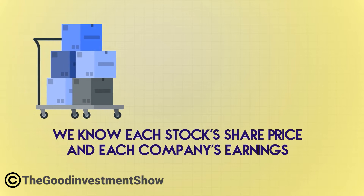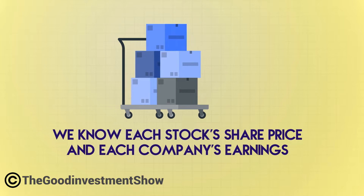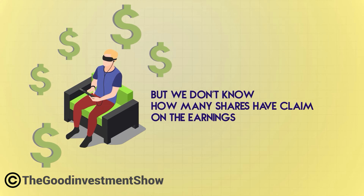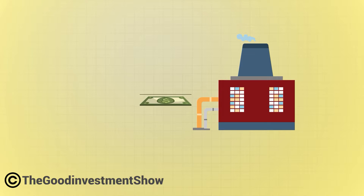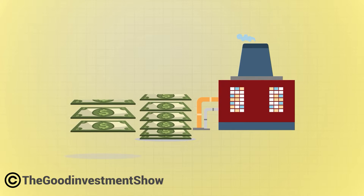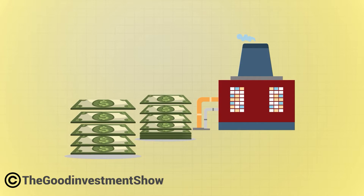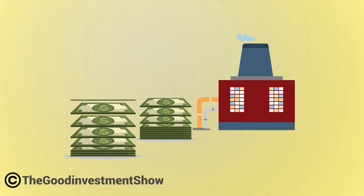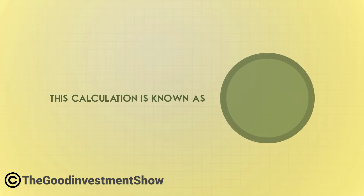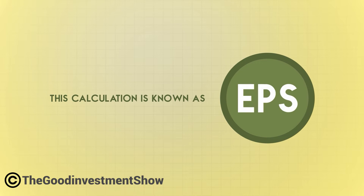We know each stock's share price and each company's earnings, but we don't know how many shares have a claim on the earnings. To put it another way, we need to know how many shares the company has issued to calculate the value of each share relative to the company's overall earnings. This calculation is known as Earnings Per Share, or EPS.